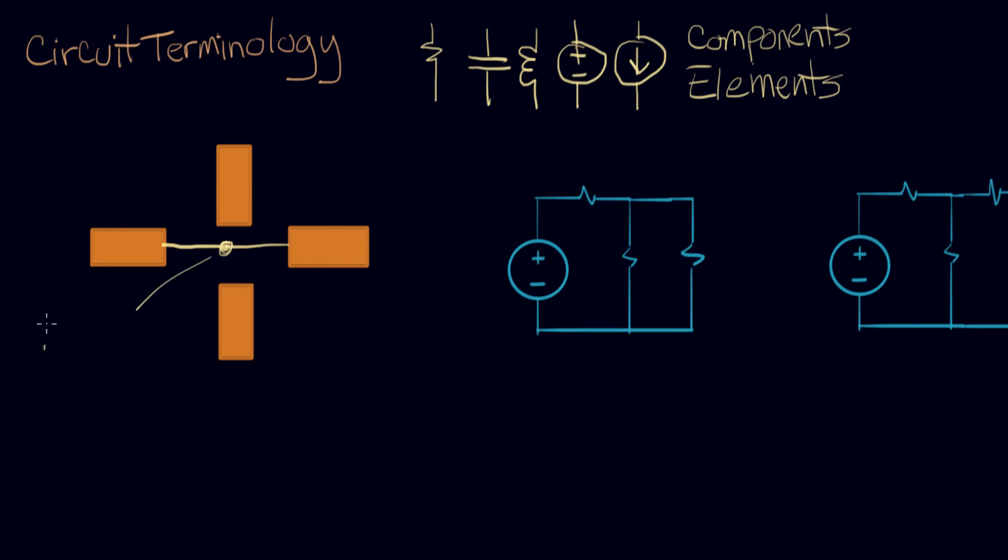And that is called a node. Node is the word for junction, meaning the same thing. That's what a node is. If I connect up these two other components, I still have one node because I have one junction that's the same voltage everywhere. So that's what a node is.